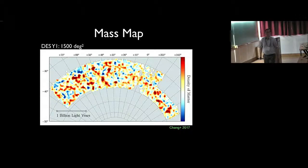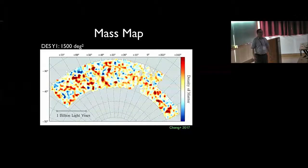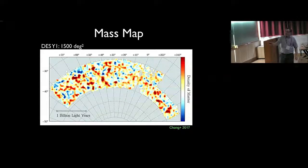We can use these maps for various purposes, including comparing this with luminous matter and measure bias and so on. But one can also look at the statistical properties of this projected mass distribution and infer cosmology.